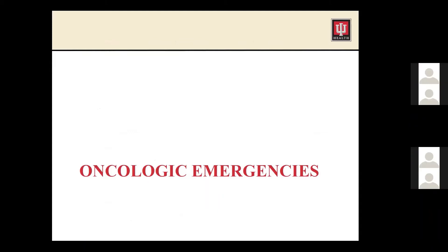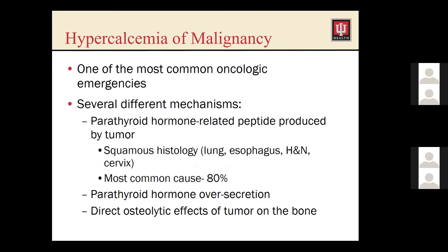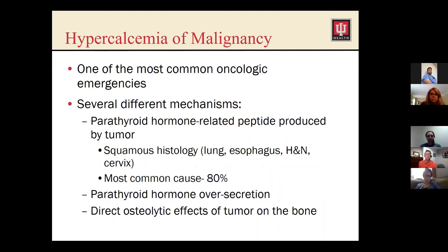Moving on to oncologic emergencies — the first is hypercalcemia of malignancy, something we see pretty commonly on the inpatient side. There are a few mechanisms: parathyroid hormone-related peptide produced by tumors, most often in squamous histology cancers — lung, esophageal, head and neck, and cervical patients. We also see parathyroid hormone over-secretion, and more rarely a direct osteolytic effect of the tumor on bone, typically in multiple myeloma patients or those with extensive bone metastases like prostate or breast cancer.